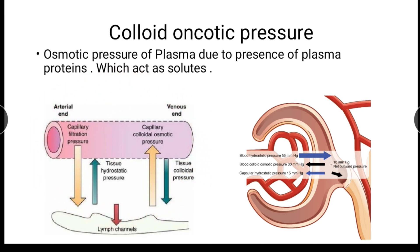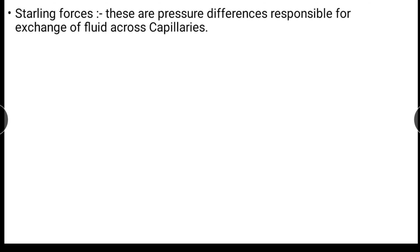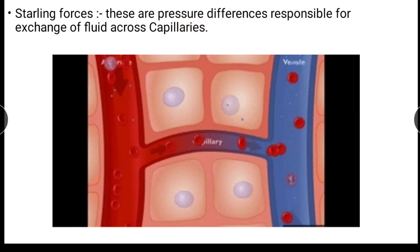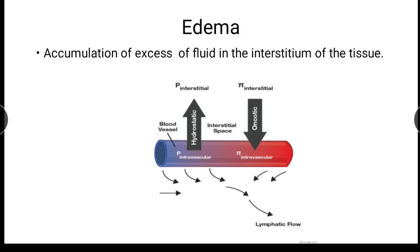Oncotic pressure prevents loss of fluid from the compartment to the interstitium, and we can see its action in capillaries and glomerular filtration. Starling forces are not actually forces, but pressure differences responsible for the exchange of fluid across the capillaries. Edema is the accumulation of excess fluid in the interstitium of tissue. The mechanism of edema formation has mainly two ways: increased hydrostatic pressure due to hypervolemia, and decreased oncotic pressure due to reduced plasma proteins.